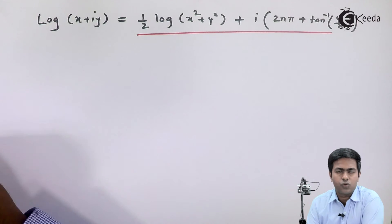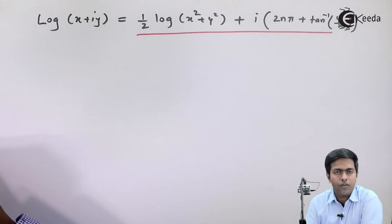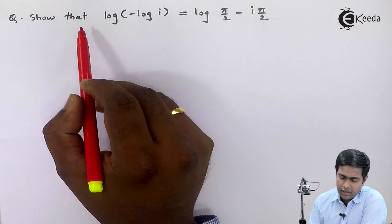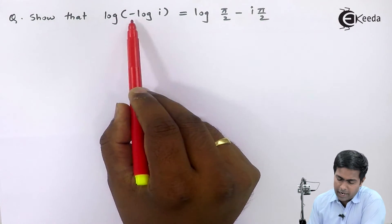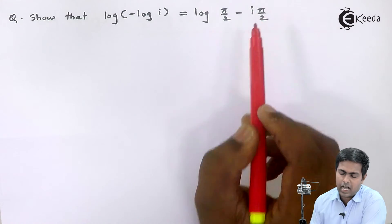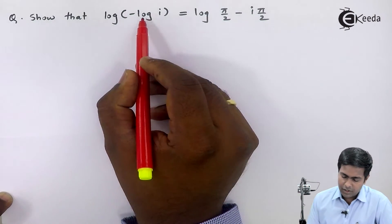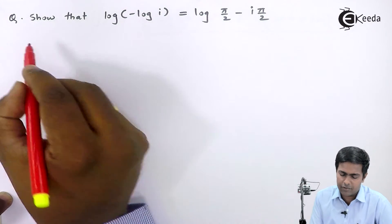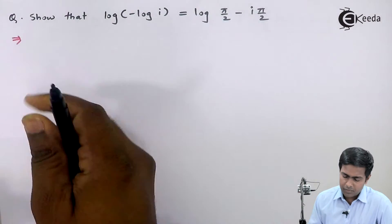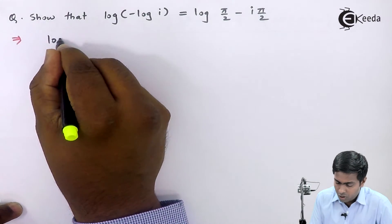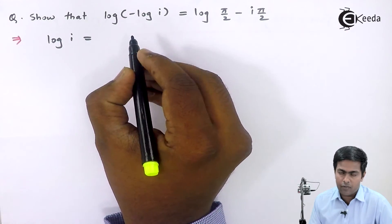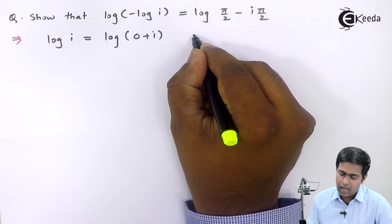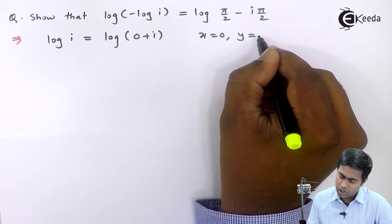These two formulas will be useful to find the value in numerical problems. Let us see the first numerical. Here we have to show that log of minus log i equals log of pi by 2 minus i pi by 2. We can see the term inside the bracket is the logarithm of a complex number, so let us start with log of i. Comparing i with x plus iy gives us 0 plus i times 1, so x equals 0 and y equals 1.